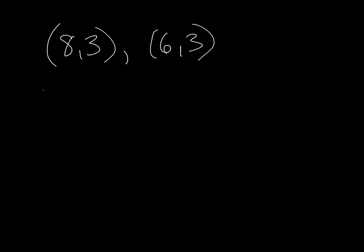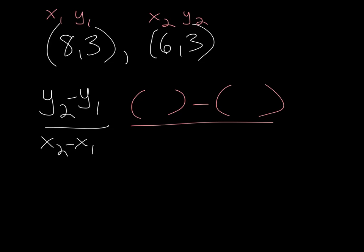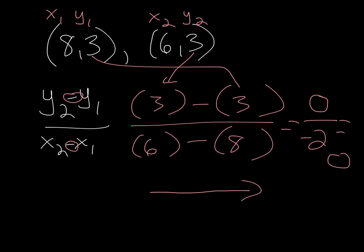We have y sub 2 minus y sub 1 over x sub 2 minus x sub 1. I can label my first one x sub 1, y sub 1, and x sub 2, y sub 2. I'm going to put the values where y sub 2 and y sub 1 are, and then x sub 2 and x sub 1, making sure I leave the minus sign in the middle. So y sub 2 is 3, y sub 1 is 3, x sub 2 is 6, and x sub 1 is 8. So I have 0 over negative 2, which is 0. So this line must have looked like this to begin with.